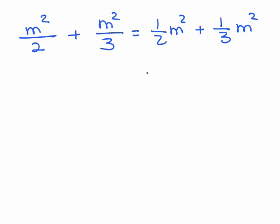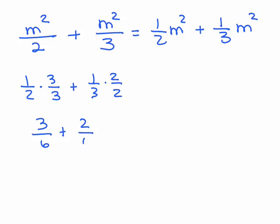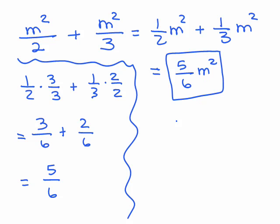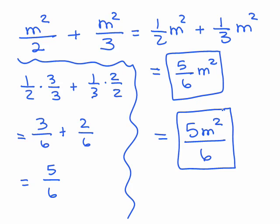One way is getting a common denominator. So if I have 1 half, I need to multiply it by 3 over 3 to get a common denominator of 6, and 1 third will be 2 over 2 — so I have 3 sixths plus 2 sixths, that's 5 sixths. So when I add the 1 half and 1 third my answer is 5 sixths m squared. No matter how you add the fractions, you're going to get 5 sixths m squared. You might see that written as 5m squared over 6 — that's also completely correct. One form shows it as a coefficient times the variable part, the other writes it as a single fraction; both are completely correct.